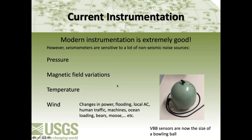Modern instrumentation is extremely good — capable of recording things from very small signals to very large over huge frequency bands. However, they've gotten so good that they've become sensitive to a whole bunch of things we don't want: pressure, magnetic field variations, temperature, wind, and other things. For global seismology, we generally don't want these sorts of signals in our data.